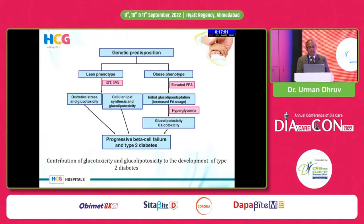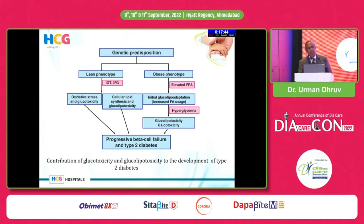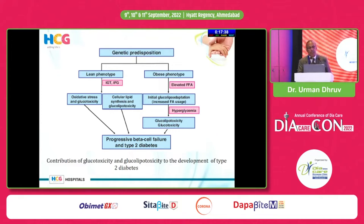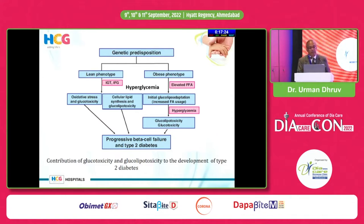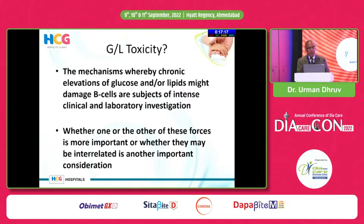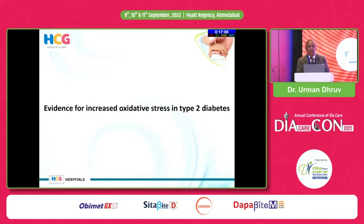In lean phenotypes, genetic predisposition may lead to glucotoxicity. In obese people with high BMI, it may lead to free fatty acids and lipotoxicity, and both will combine together. However, one should always remember: lipotoxicity comes only after hyperglycemia — that is, glucotoxicity. Lipotoxicity does not precede glucotoxicity. This debate has been going on for years, but we now have lots of references and evidence to show.